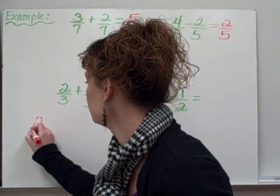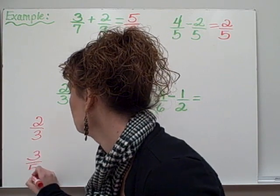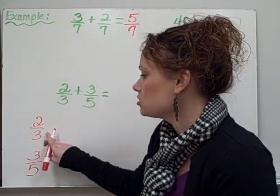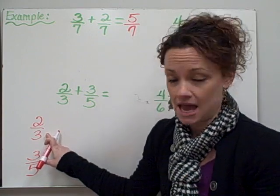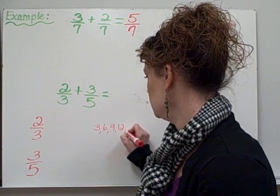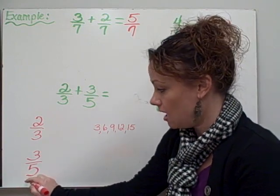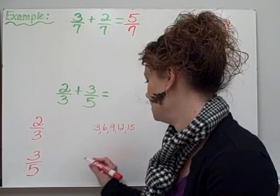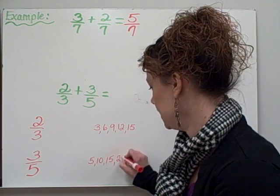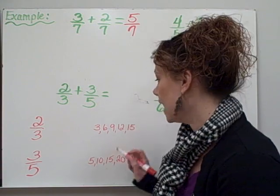Here's how we do that. We rewrite our fractions one above the other, and then we need to look at our denominators. For this fraction, my denominator is 3, so I'm going to go ahead and write down the 3 times table: 3, 6, 9, 12, 15. And I'm going to do the same for my denominator down here — I have a 5, so I write the 5 times table: 5, 10, 15, 20.